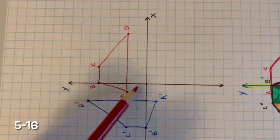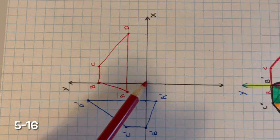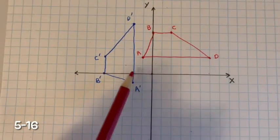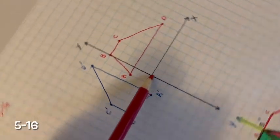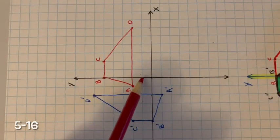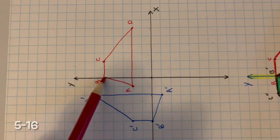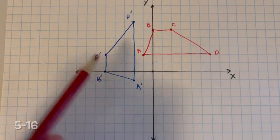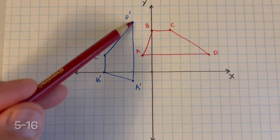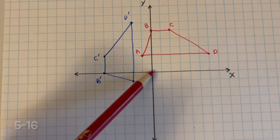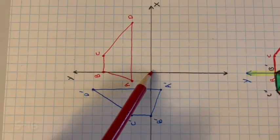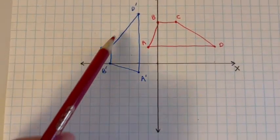I can write down all of the rotated coordinates on paper or do them one at a time. A′ is at (−2, 1). For B, rotating gives B′ at (−5, 0). I do the same thing for C′ and D′. For me, it's easier to rotate the figure, write down all the coordinates, rotate it back, and then go ahead and plot those points.